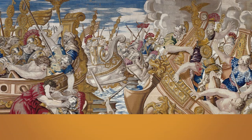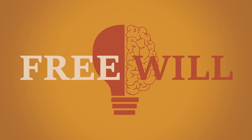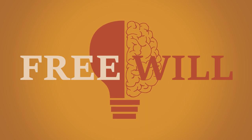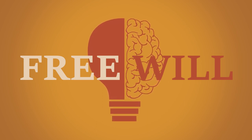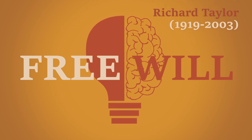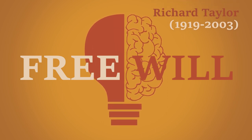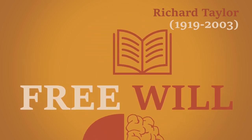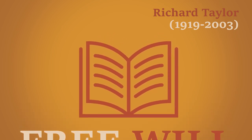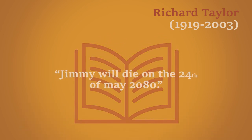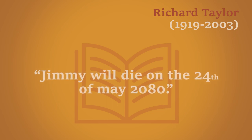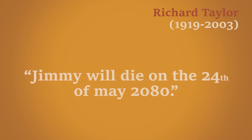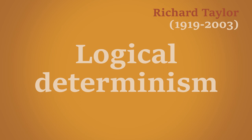But was Aristotle justified in doing so? If free will and logic conflict, why not deny free will rather than adding such a weird exception to this fundamental principle? Authors such as Richard Taylor argued that we should accept the consequences of this logic and deny free will. He told us to imagine a book containing all the statements about the past, the present, and the future. The statement that Jimmy will die on the 24th of May, 2080 is either true or false — whatever the case, it is logically determined. Hence, we call this view logical determinism.